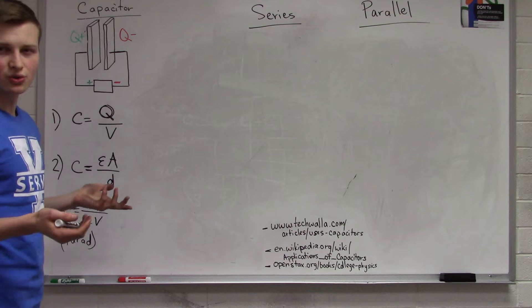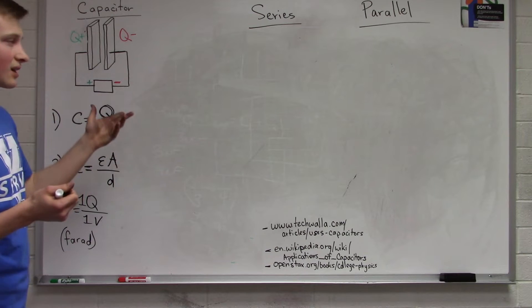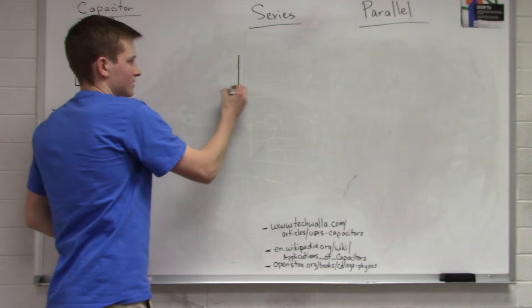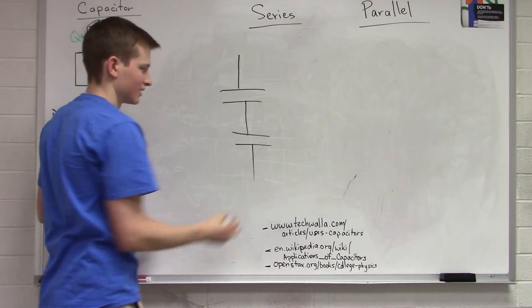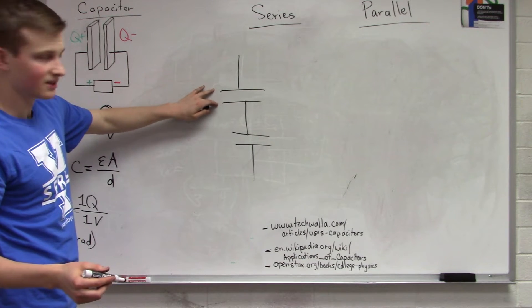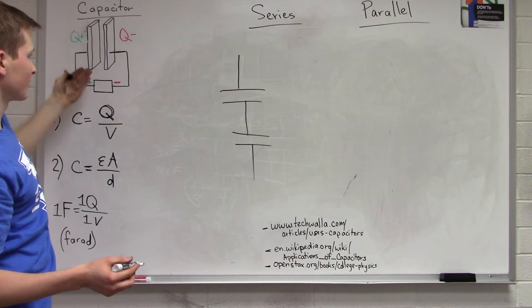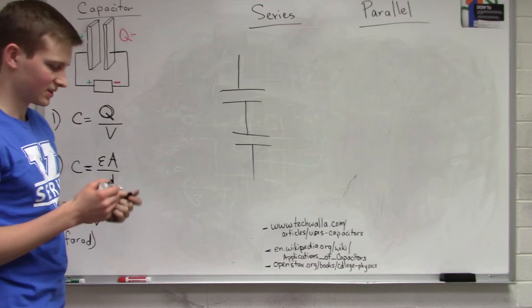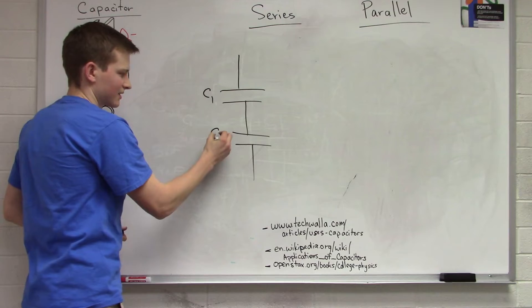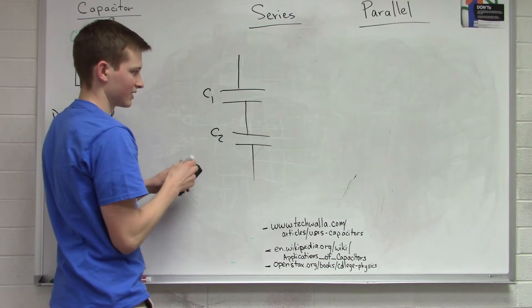There are two ways that we can combine capacitors when we're using them in a circuit. The first that I'll go over today is capacitors in series. So here we have two capacitors. Notice that we draw capacitors as two lines, two equivalent lines separated by some distance, really similar to the idea here where we have two plates separated by some distance. And we'll label this capacitor one and this capacitor two.